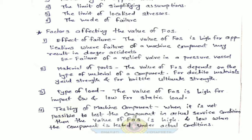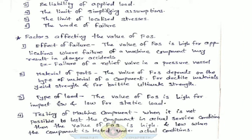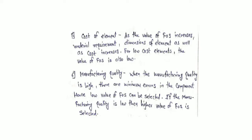Factors affecting the value of factor of safety include: first, the effect of failure — for example, the failure of a relief wall of a pressure vessel is a critical consideration. Second, the type of material used for different parts. Third, the type of load acting on the product. Fourth, testing of the machine component — whether actual service conditions or theoretical conditions are applied — which affects how testing varies.